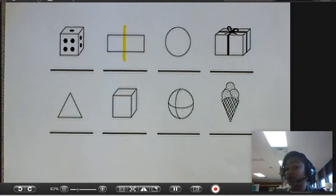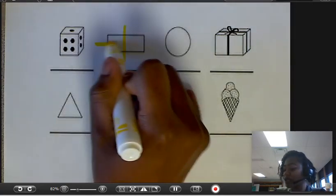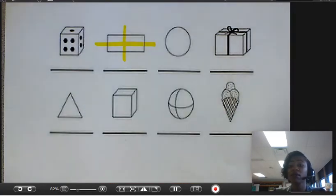However, I hope you noticed that we can also draw a horizontal line to show a line of symmetry. Both of those lines will help us determine if our shape is symmetrical.